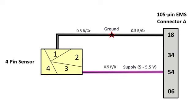Pin 3 receives supply voltage from EMS pin 54. Pin 1 connected to EMS pin 18 is ground.